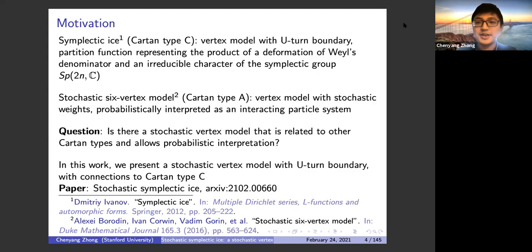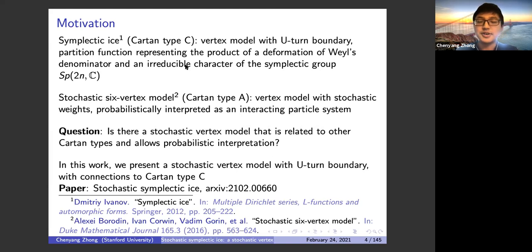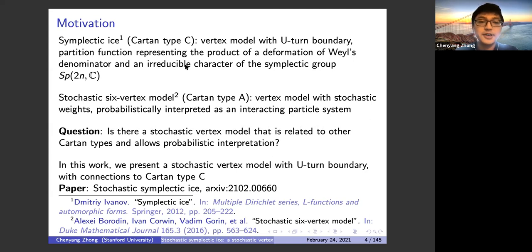Let me introduce the motivation for studying stochastic symplectic ice. The name comes from work by Ivanov on symplectic ice, which is related to Cartan type C. Specifically, it is a vertex model with a U-turn right boundary, where pairs of lines are connected by a U-turn. The partition function in Ivanov's paper represents the product of a deformation of the Weyl denominator and an irreducible character of the symplectic group — a generalization of Tokuyama's formula to the symplectic case.